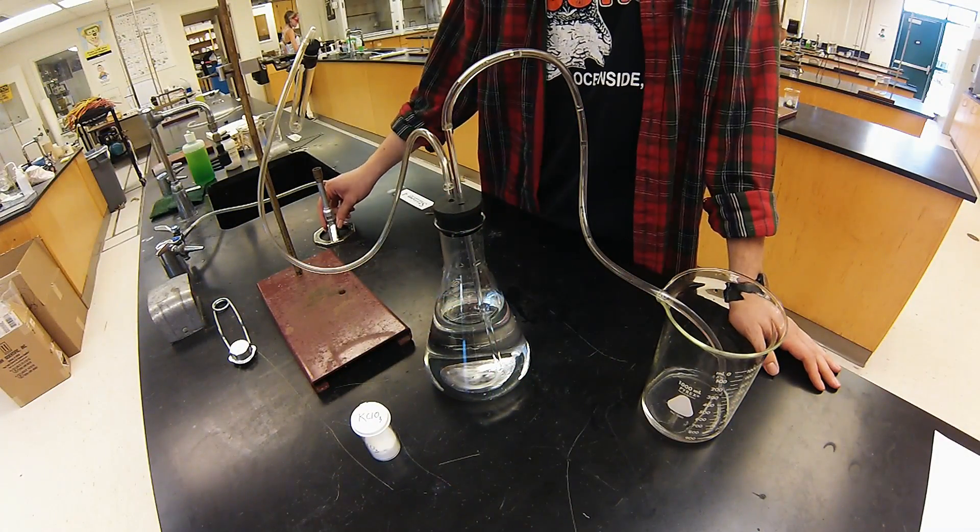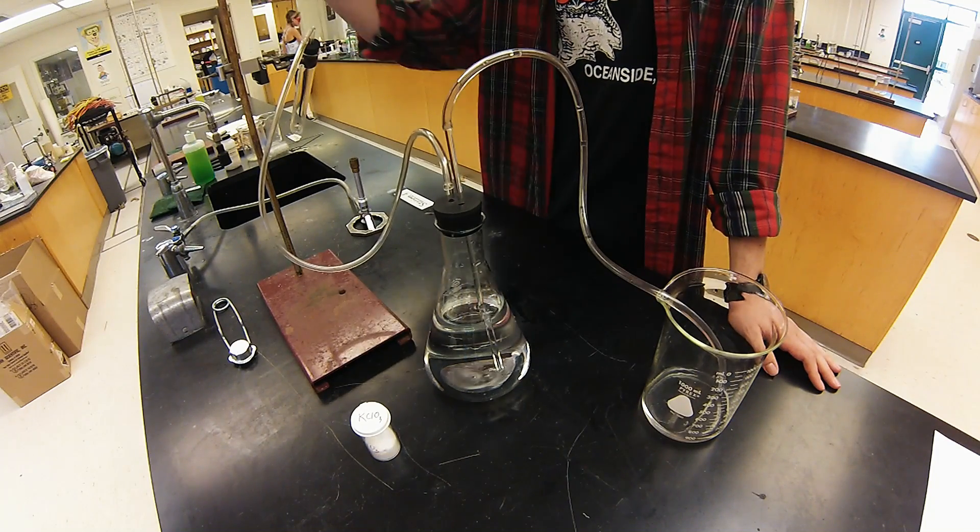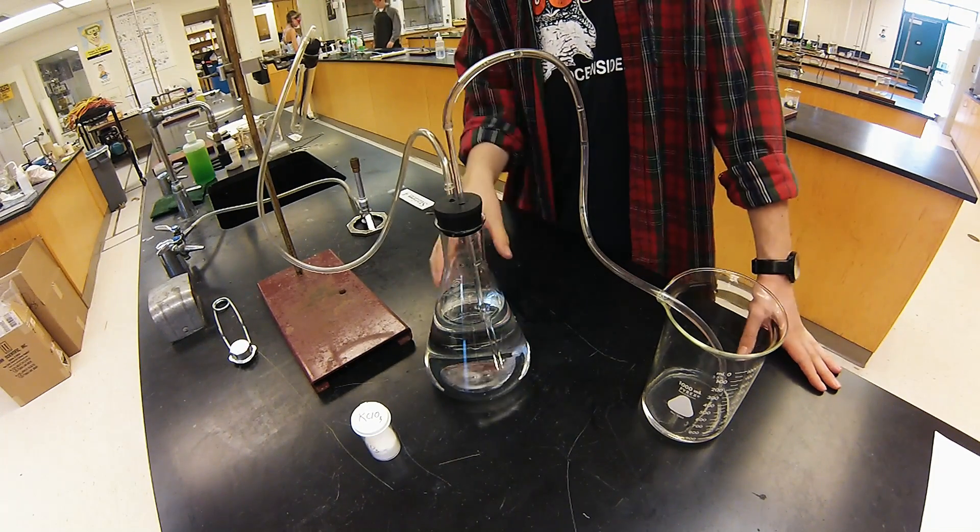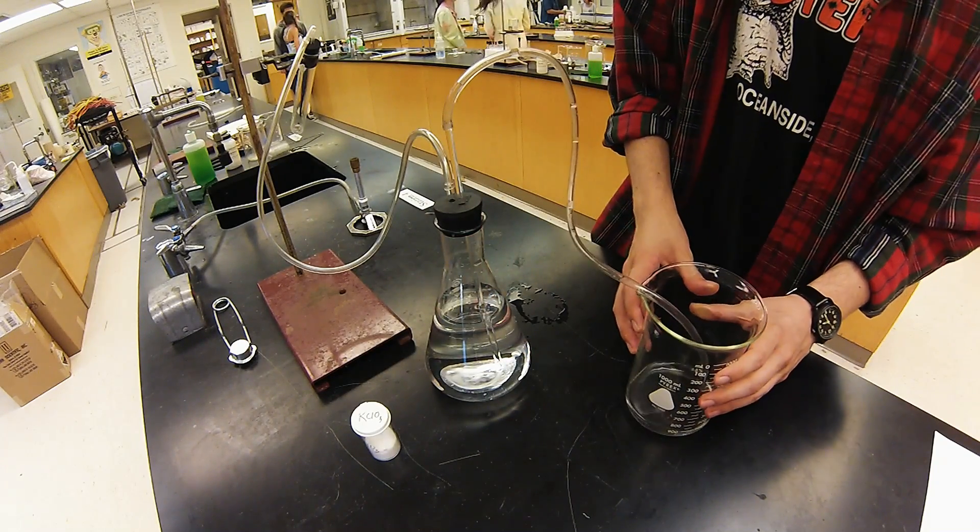For this lab we're going to need a Bunsen burner, a large test tube, an iron ring stand, and a thousand milliliter Erlenmeyer flask and beaker to go along with it.